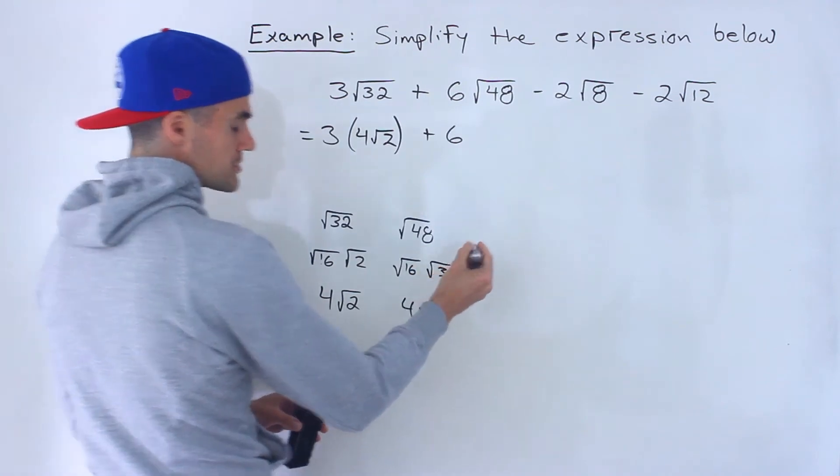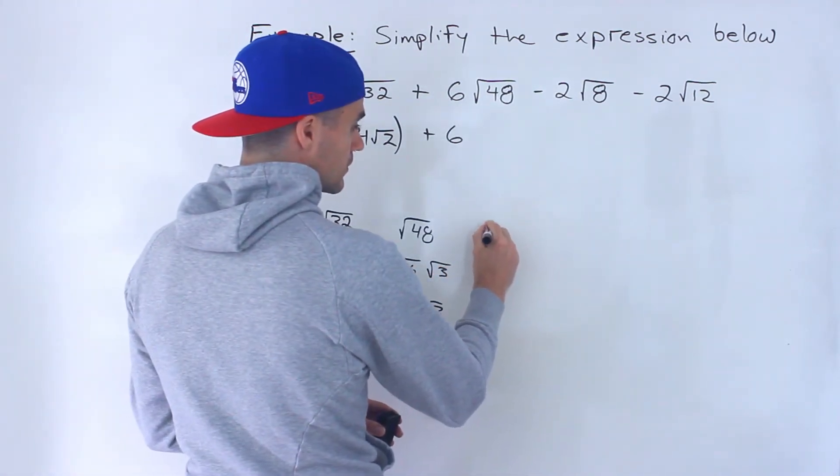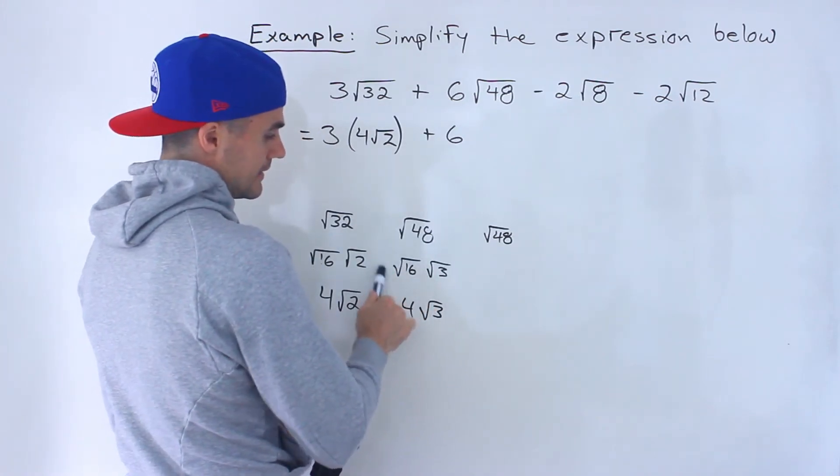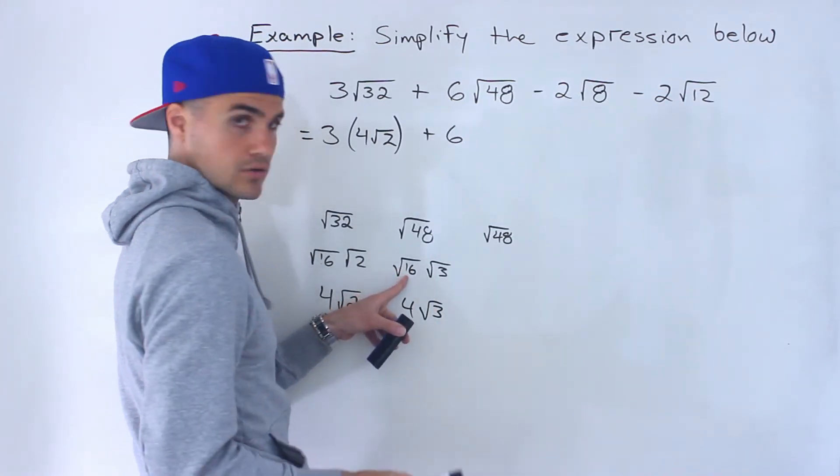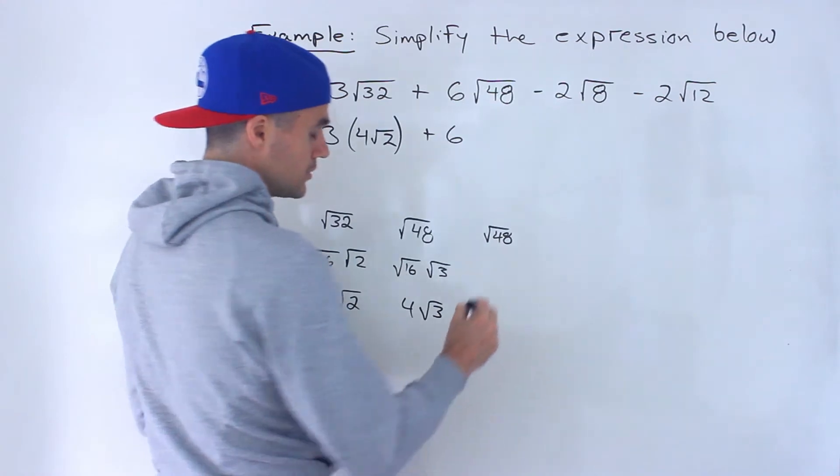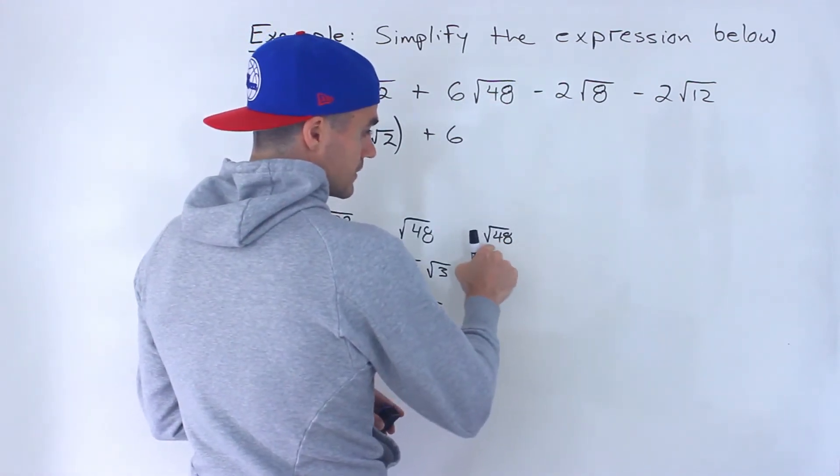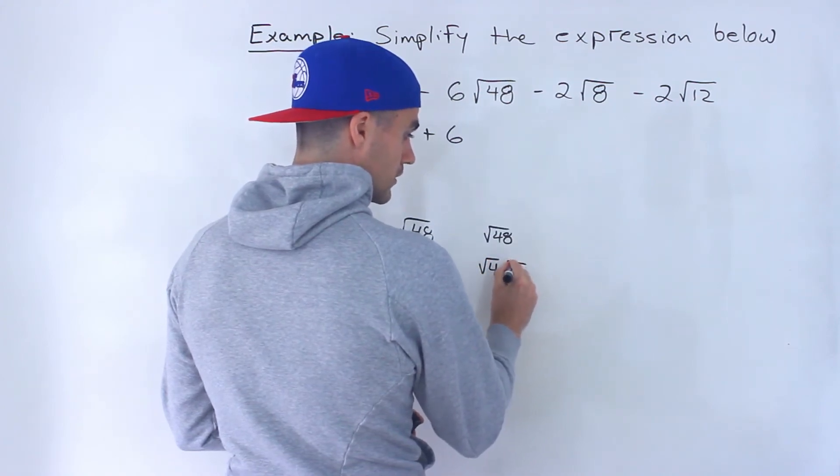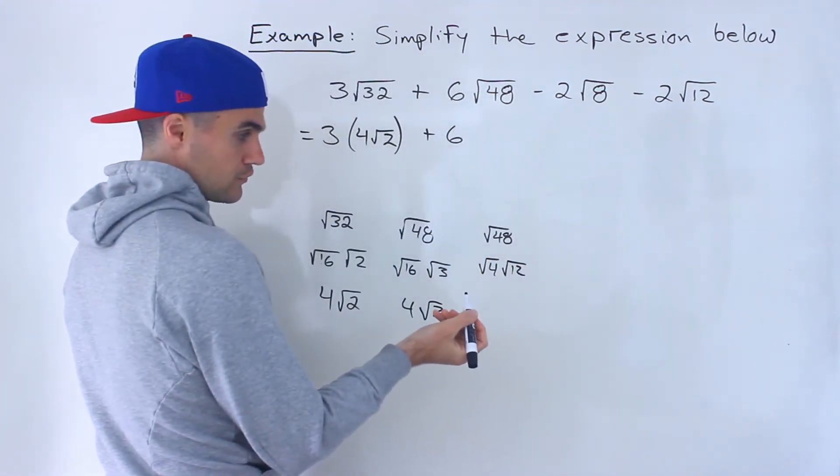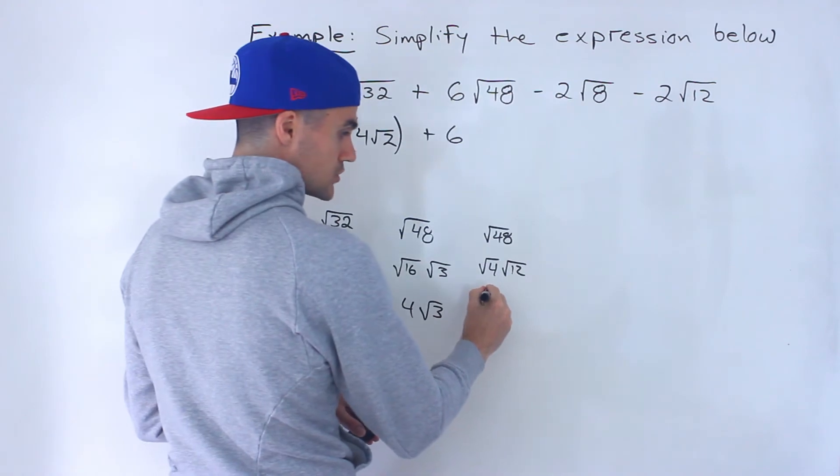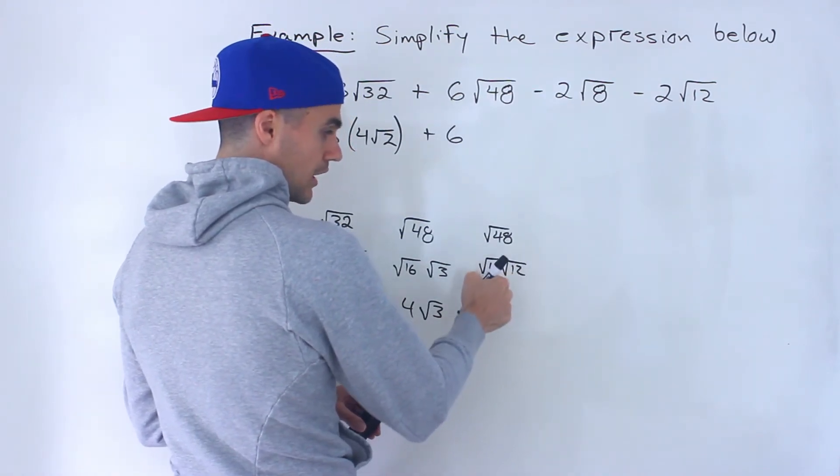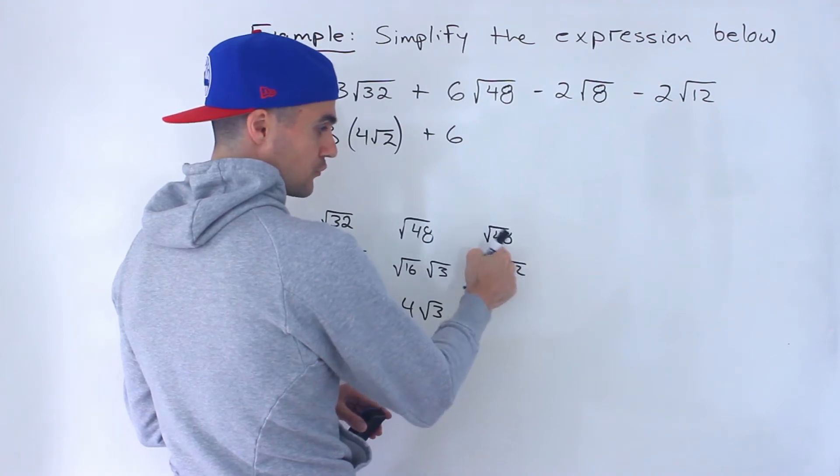You could also do this in multiple steps. So like root 48, if sometimes you can't get to this larger perfect square number, you can notice that root 48 simplifies to root 4 times root 12, right? And then root 4 is 2. Actually, you know what, let's keep the root 4 for now. So we got root 4 times root 12, which is root 48.